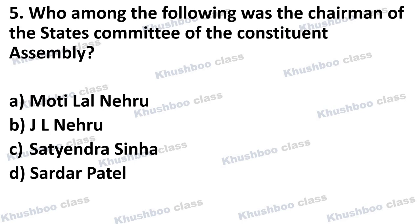The next question is: Who among the following was the Chairman of the States Committee of the Constituent Assembly — the assembly that wrote and made the Constitution of India? Option A is Motilal Nehru, Option B is Jawaharlal Nehru, Option C is Satyendra Sinha, and Option D is Sardar Patel (Sardar Vallabhbhai Patel). The answer is Option B, Jawaharlal Nehru. The Chairman of the States Committee of the Constituent Assembly was Jawaharlal Nehru.